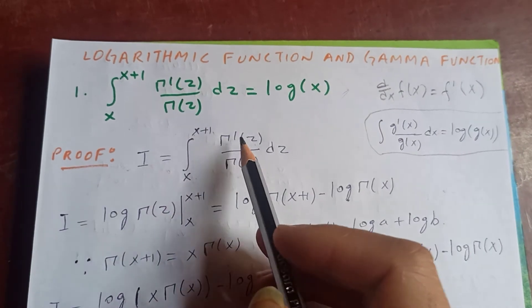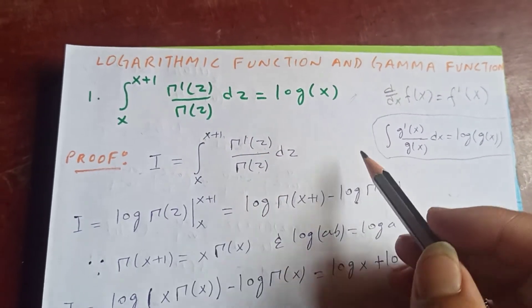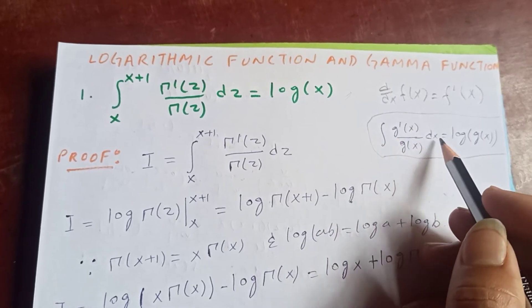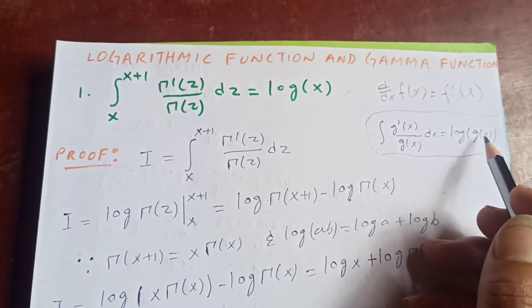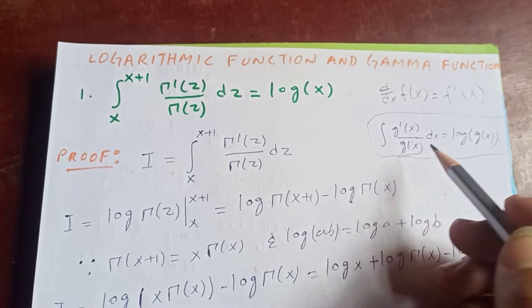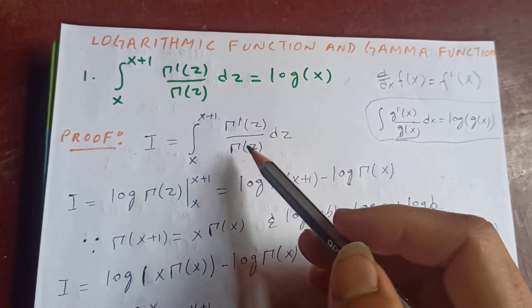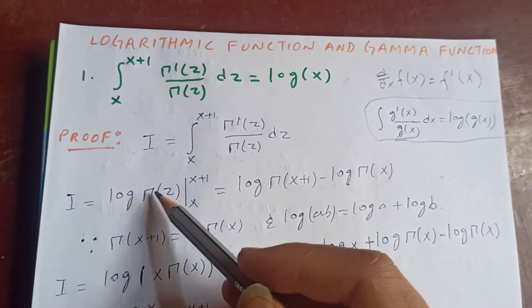Similarly this one, this prime with respect to z dz. So this one in terms of this, it is log of denominator f of x. Now applying that, this one will be, this is gamma prime and gamma z, I is equal to log gamma z.